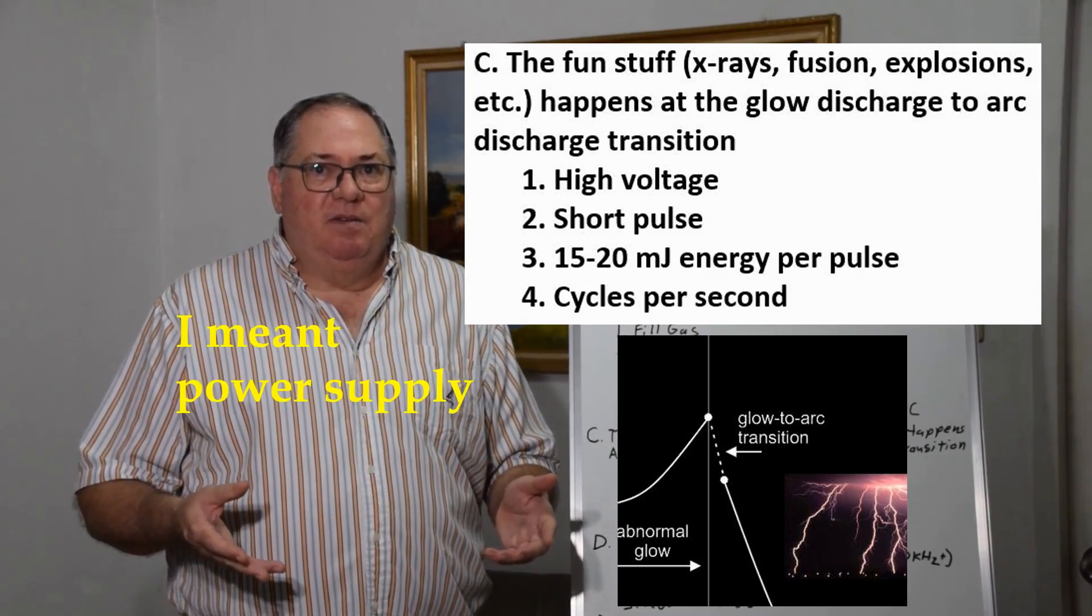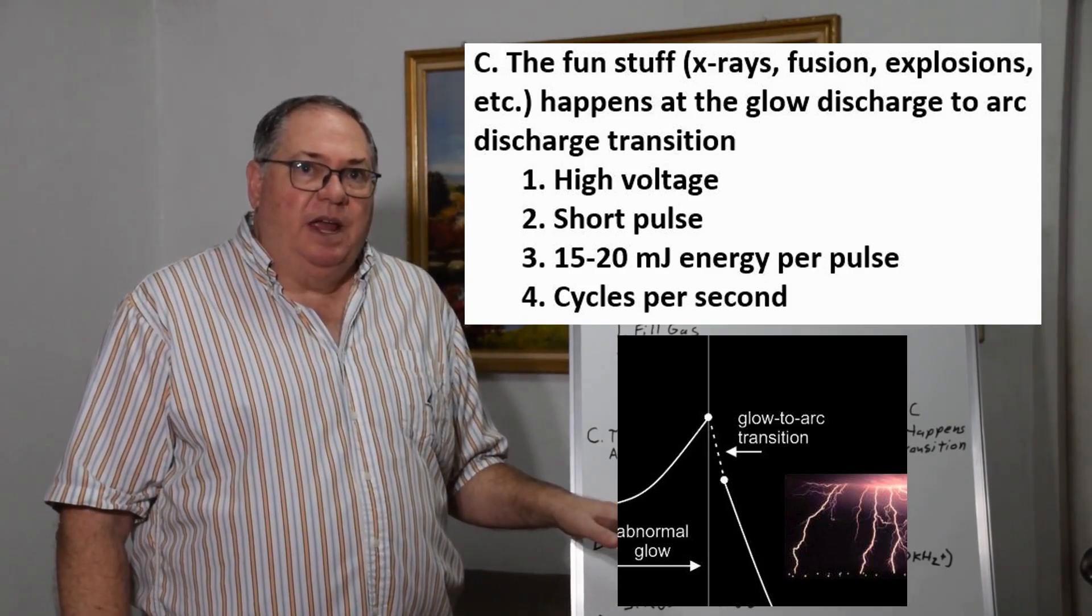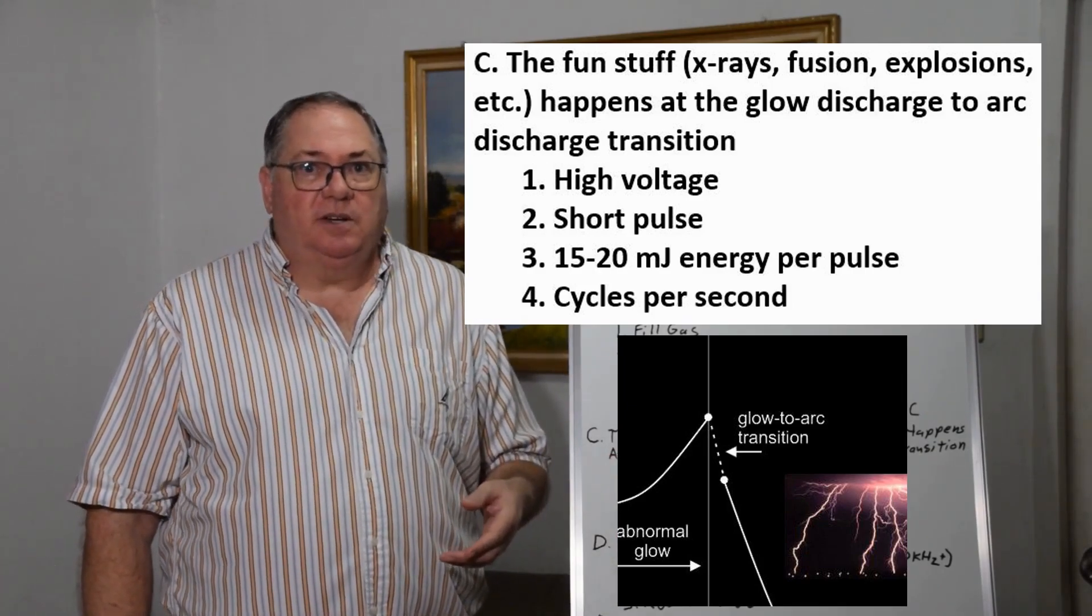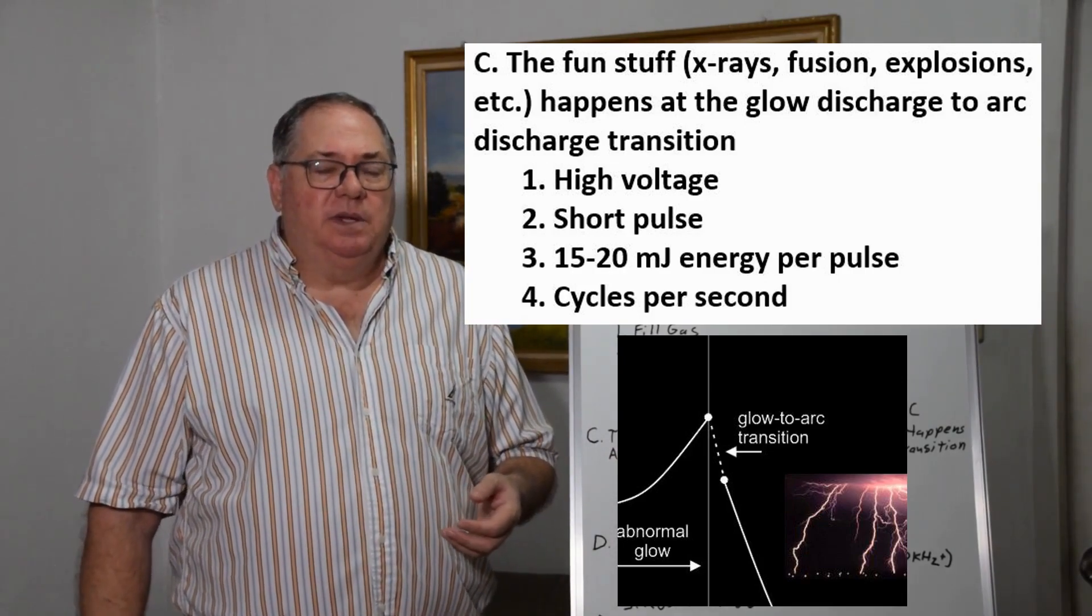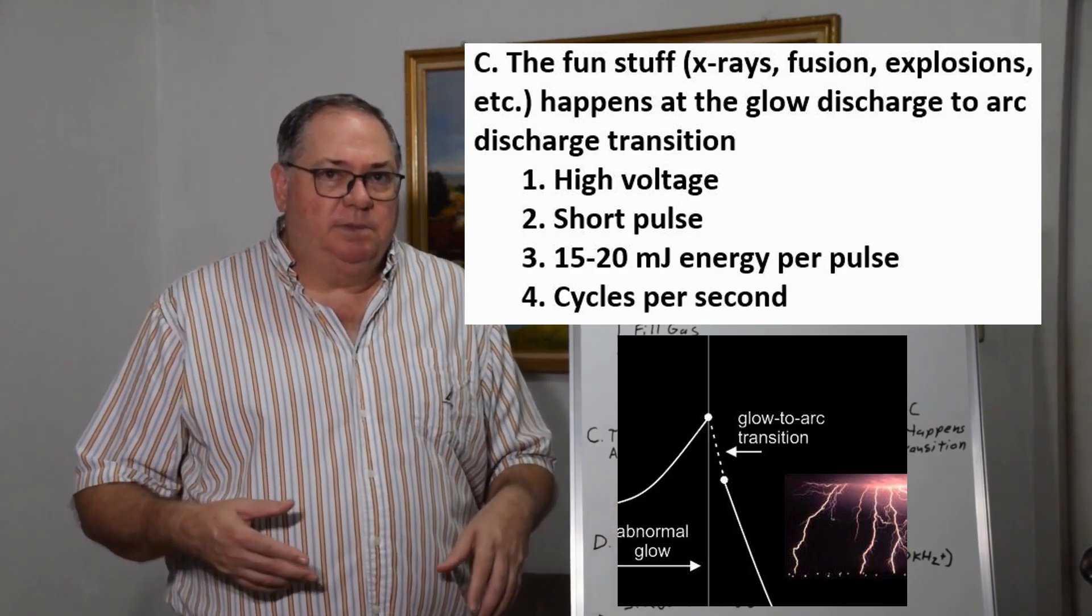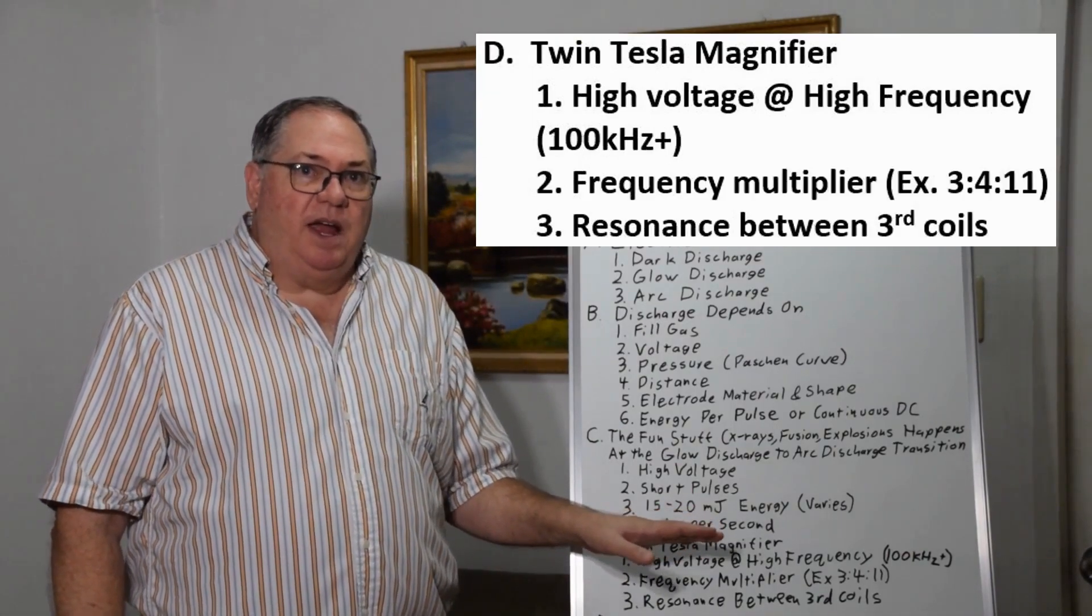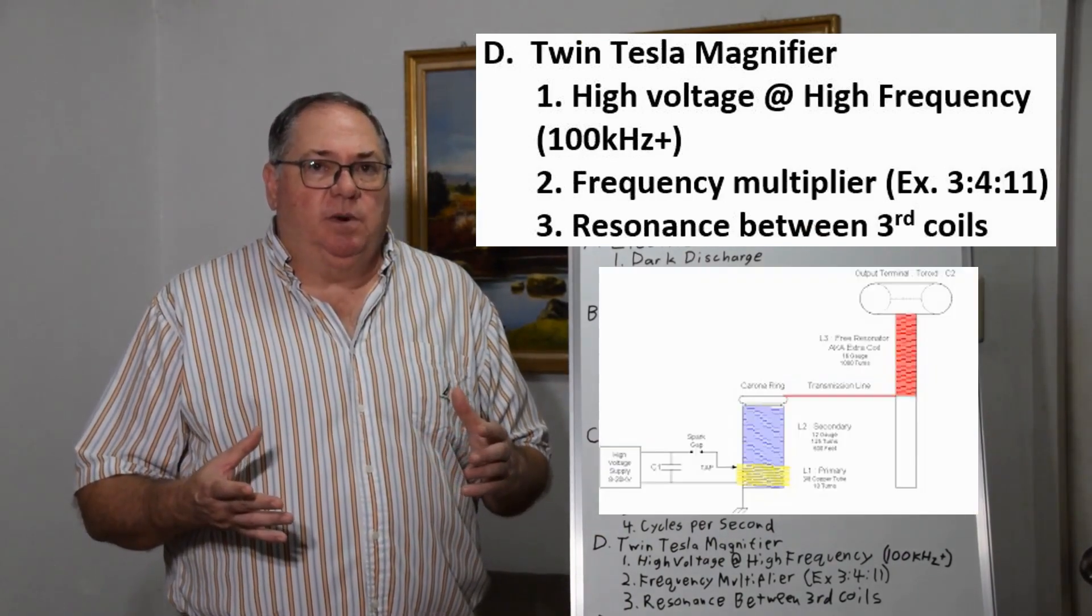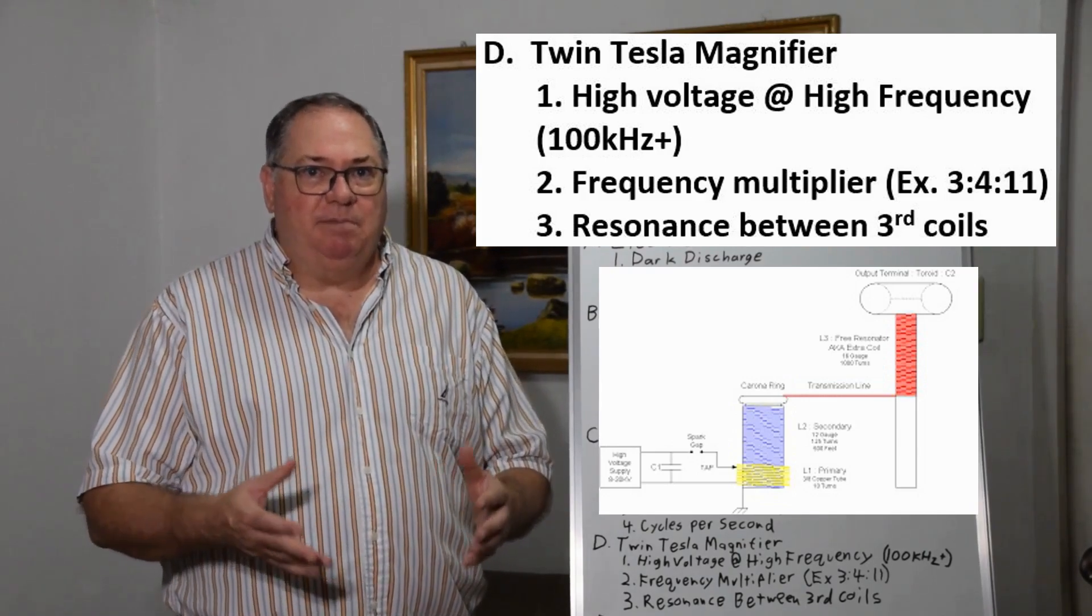You also have to ensure minimum energy per half cycle for arcs to happen. That's a problem we had with power supplies we tried 20 years ago. I wanted to try the Tesla magnifier because with ferrite core transformers we weren't getting them to resonate properly, so I'd step back to air core.